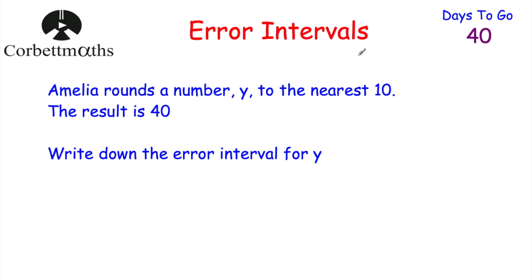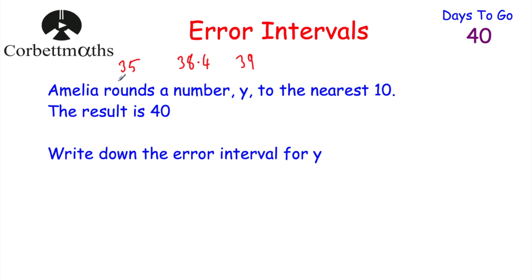In terms of the number that was rounded to the nearest 10, well, it could have been 40 — when you round that to the nearest 10, you get 40. It could have been 39, or 38.4. It could even be as low as 35, because 35, when you round that to the nearest 10, you get 40. But anything below 35 would round down to 30. So 35 is the lowest possible number, meaning Y has to be bigger than or equal to 35.